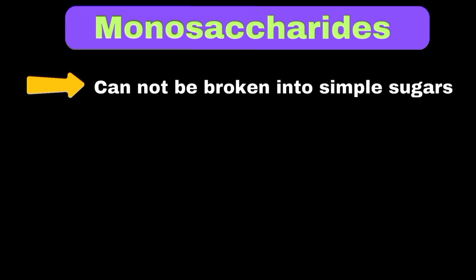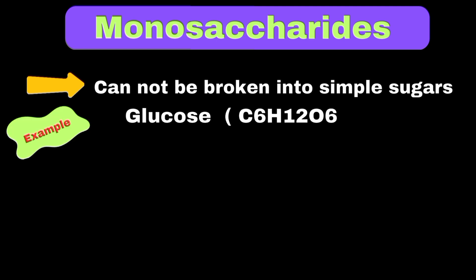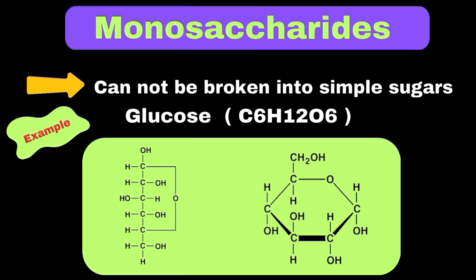Monosaccharides are the simplest forms of carbohydrates that cannot be broken down into simpler sugars. For example, glucose, which has the formula C6H12O6, is a monosaccharide. It can exist in two forms: a straight chain form and a ring form. In our body, glucose usually exists in the ring form. Similarly, fructose and galactose are also monosaccharides with the same formula but different arrangements of their atoms.